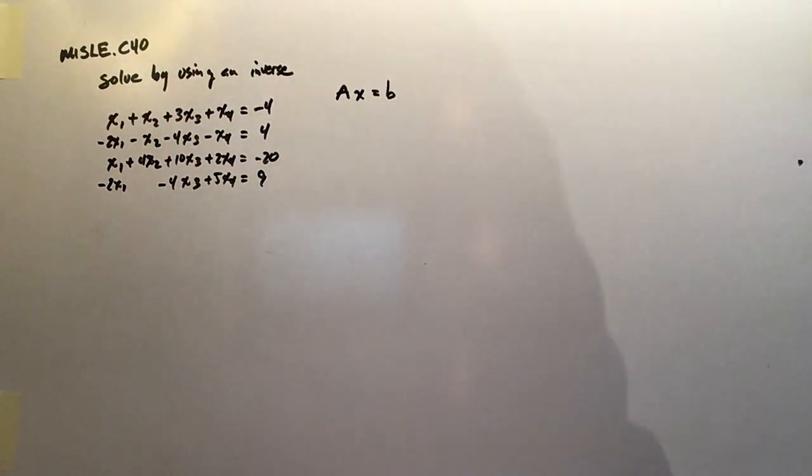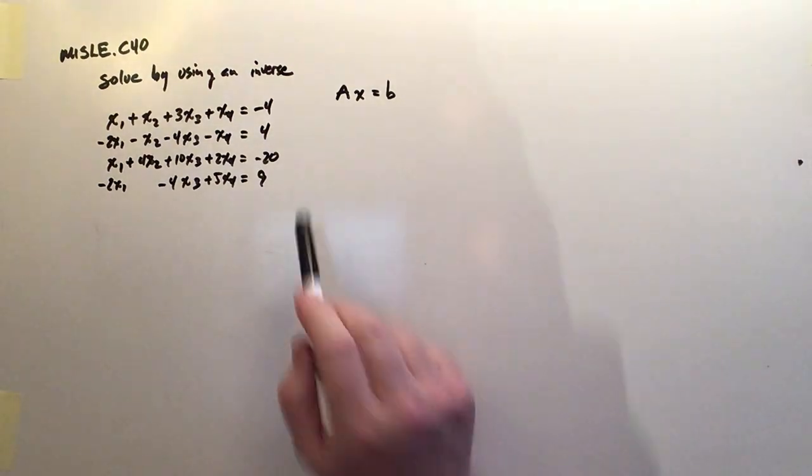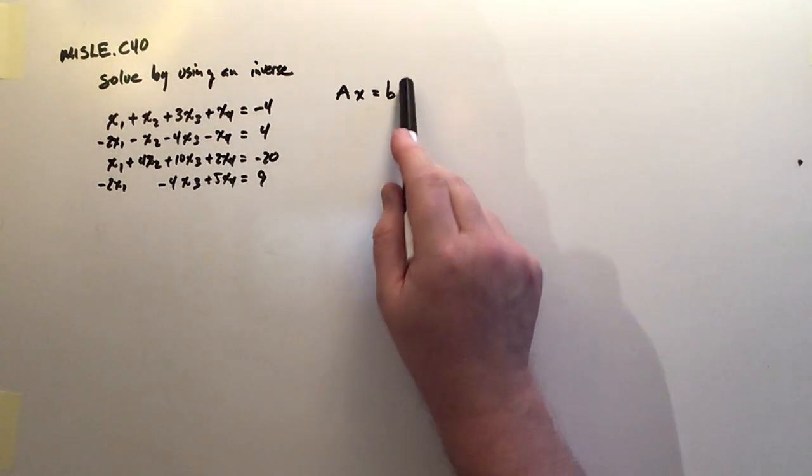Well, if this were just an ordinary algebraic expression, I would just divide both sides by A, and I would get X equals B over A.